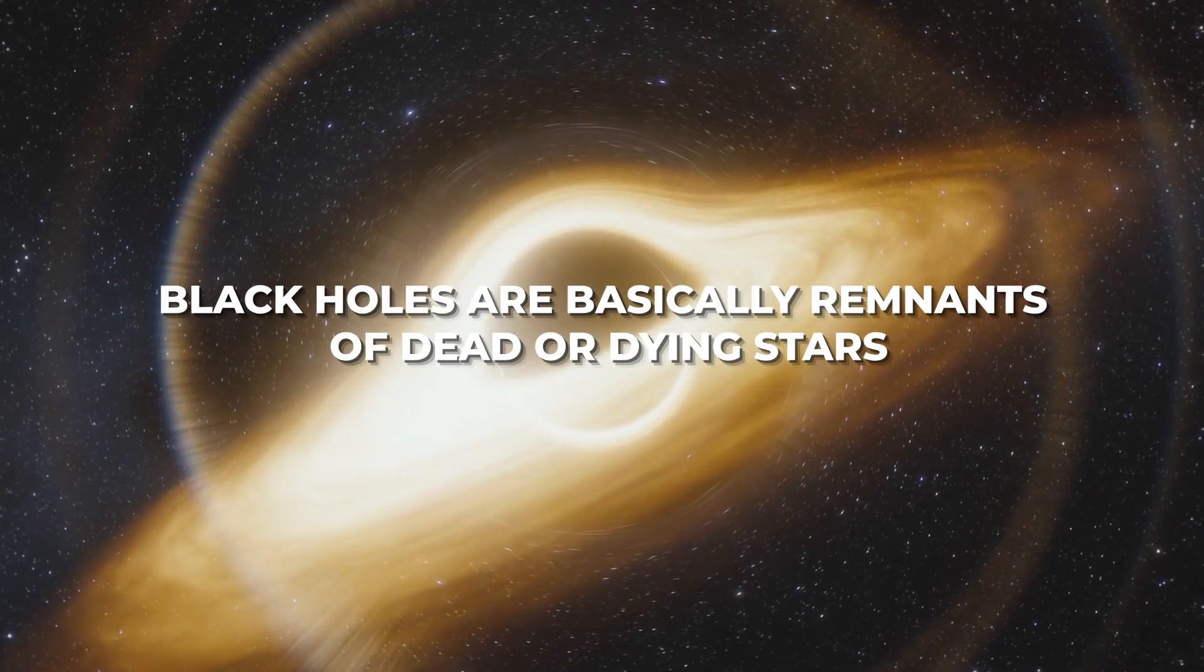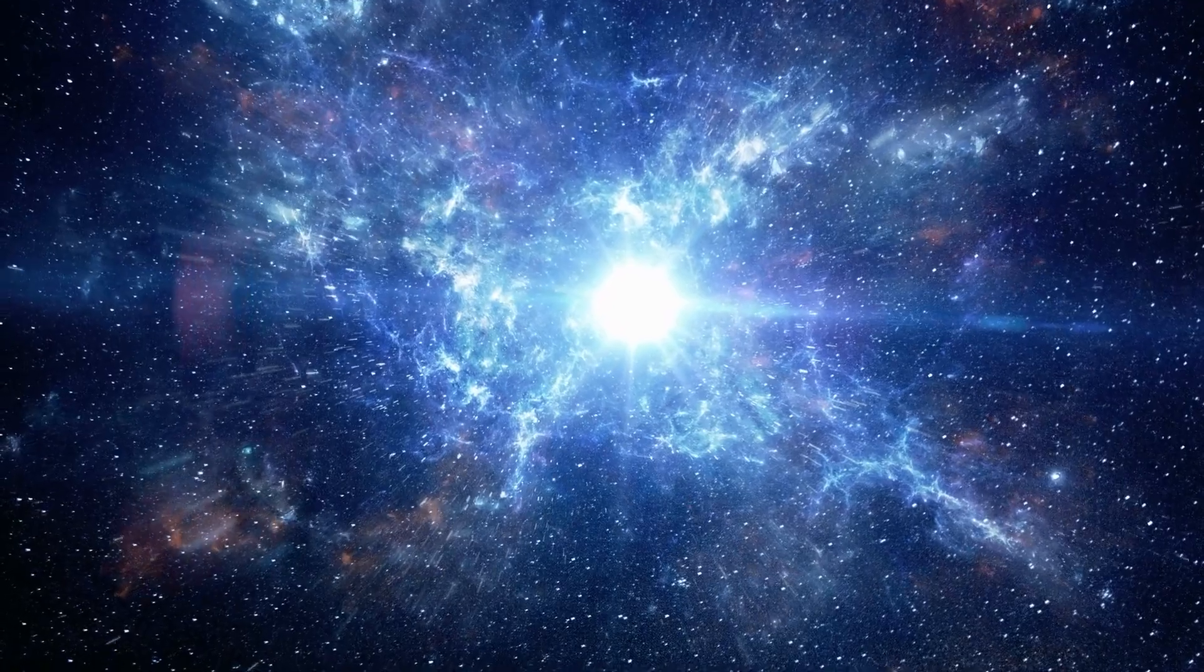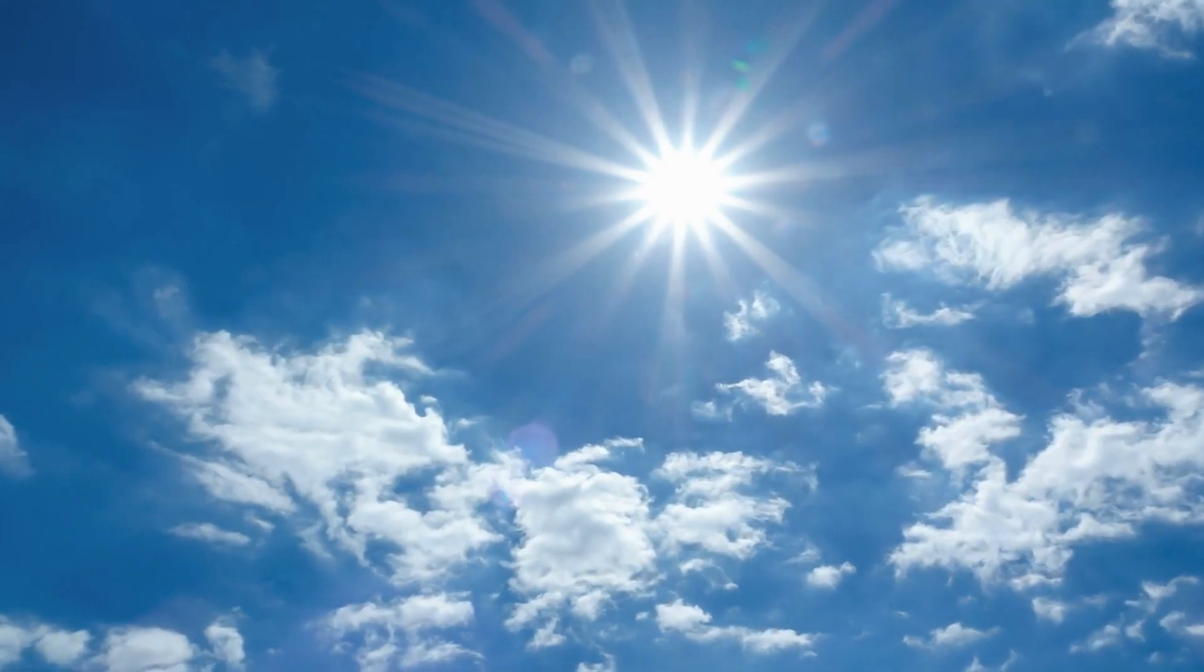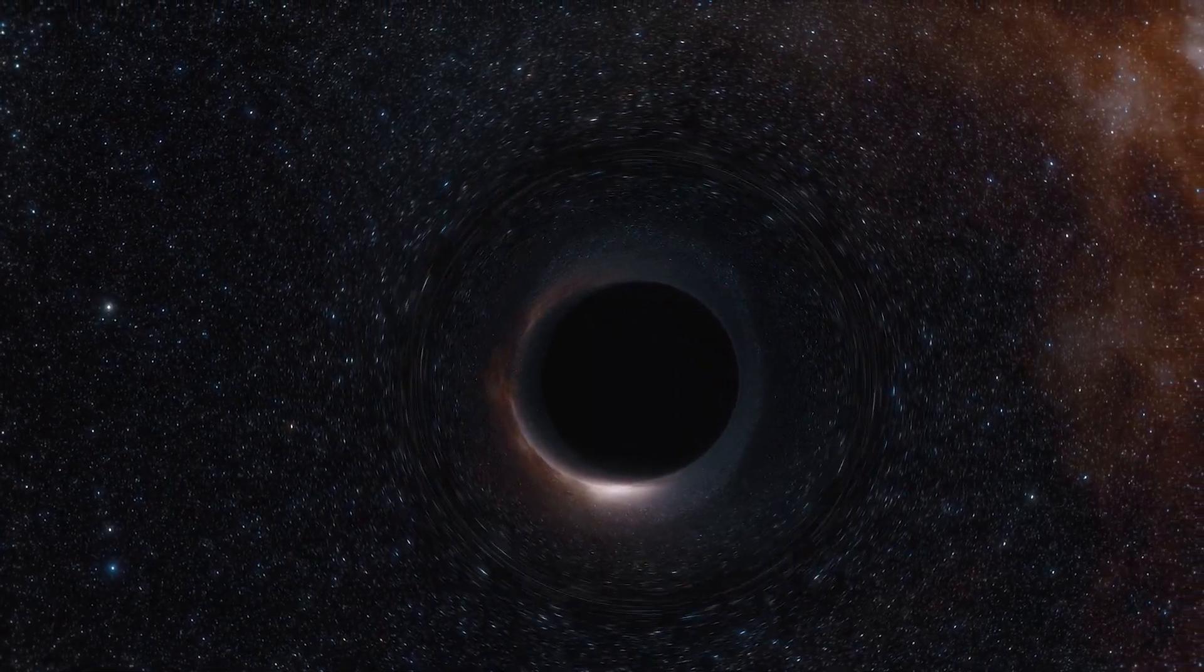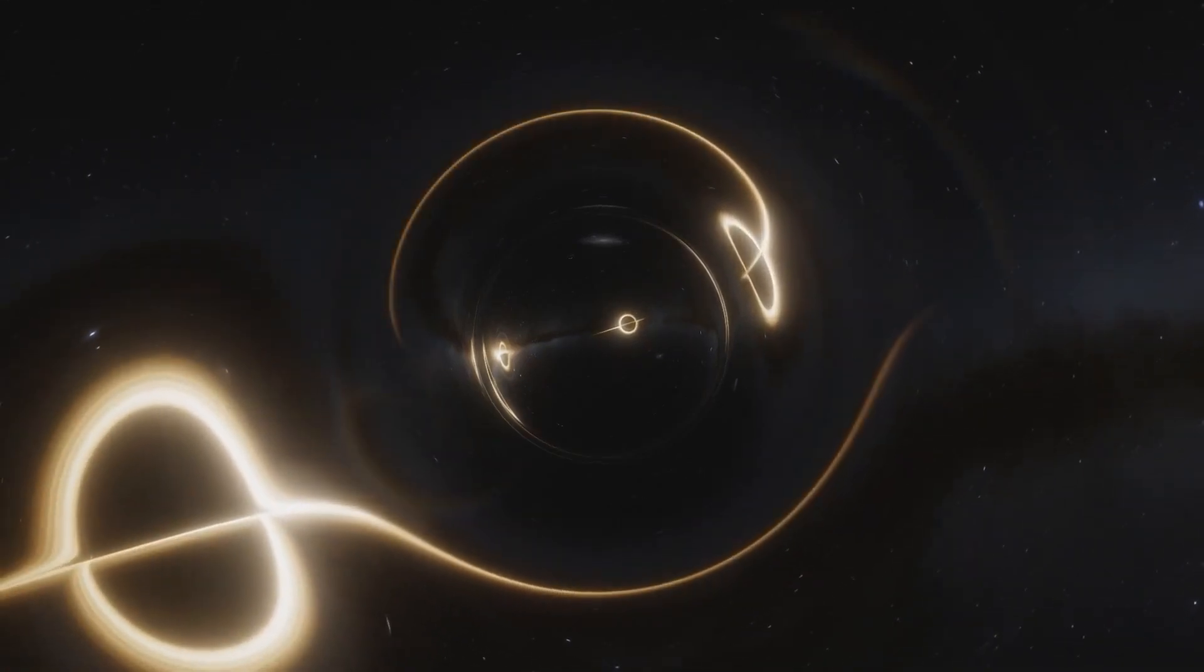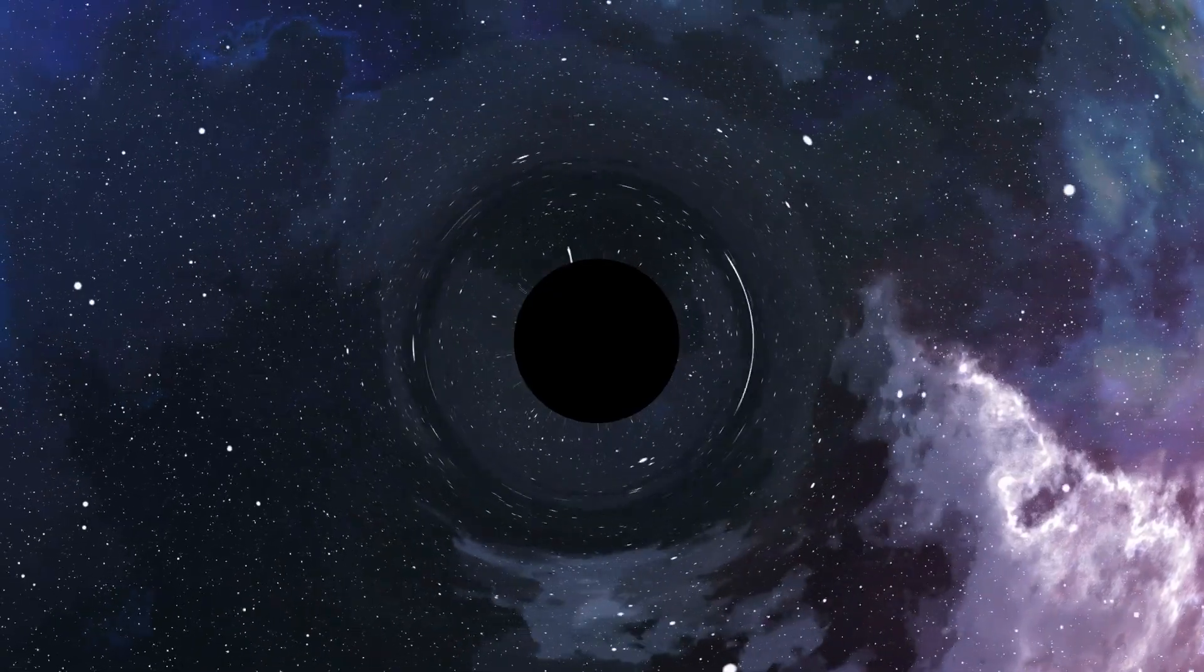Black holes are basically remnants of dead or dying stars. However, it's not just any star. It must be a star that's 20 times the size of our own sun, which is already massive in its own right. Theoretically, a black hole could be created by significantly shrinking any mass. The sole criteria are that it must be less than Schwarzschild's radius in terms of physical size, but more on that later in the video.